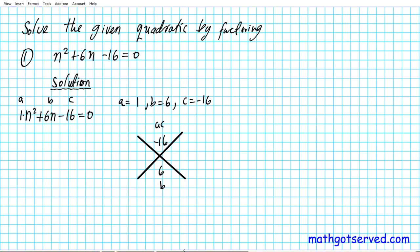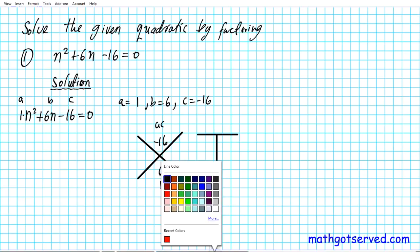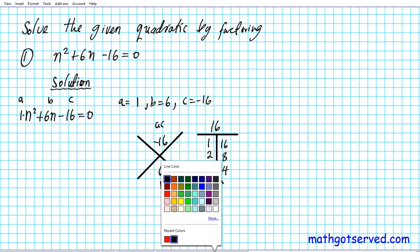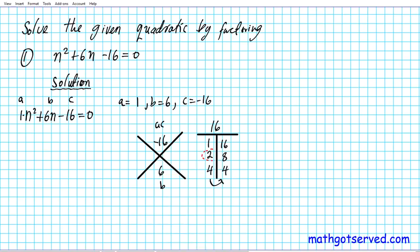We need to find two numbers that multiply to give us negative 16 and add to give us 6. Let's list factor pairs of 16: 1 × 16, 2 × 8, and 4 × 4. Looking at which pair yields a sum or difference of 6: 1 and 16 give 17 or 15; 2 and 8 give 10 or 6 — that's the pair we need: 2 and 8.